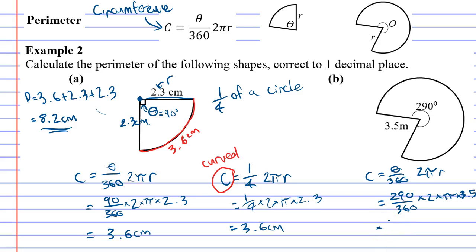We're just going to grab our calculator: 290 over 360 times 2 times pi times 3.5, which gives us 17.7 meters.